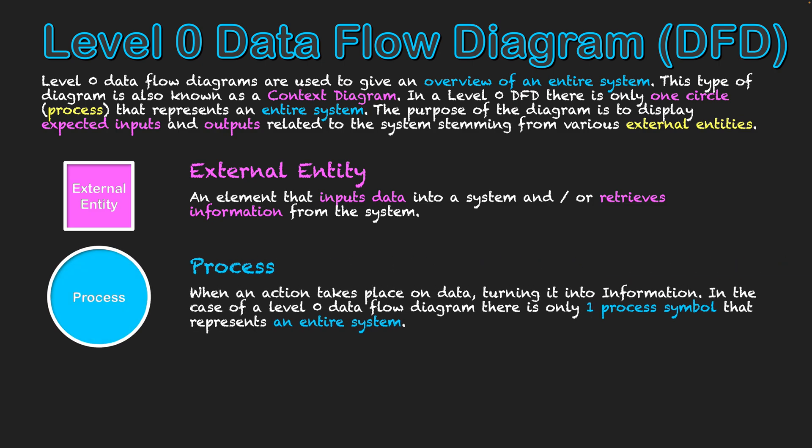Secondly, we have a circle, and this represents a process. This is when an action takes place on data turning it into information. At this level of Data Flow Diagrams, there is only ever one circle in the actual diagram, and it represents the entire system. So usually that's where the name of the system is, and we have various external entities around it showing how they interact with the system.